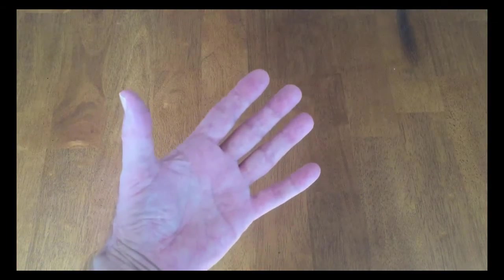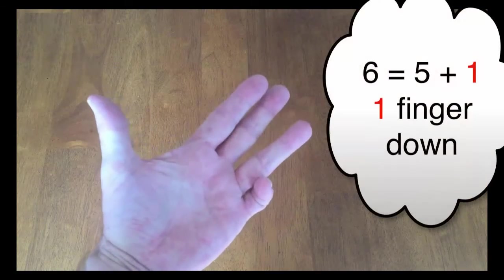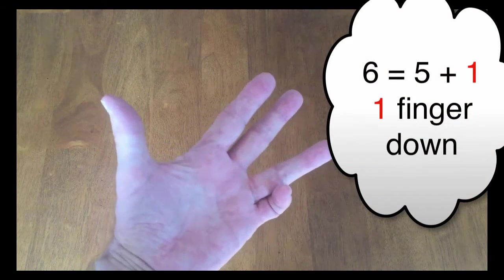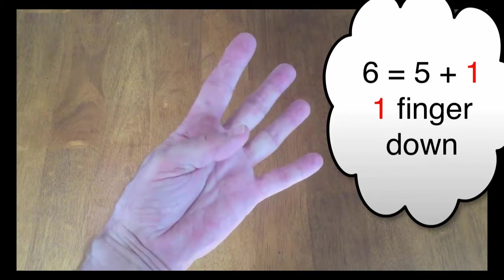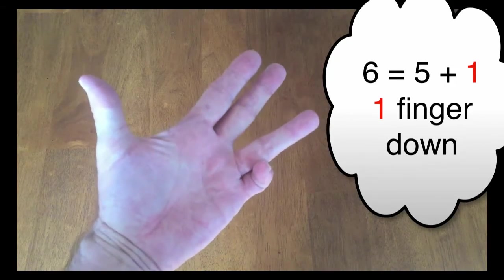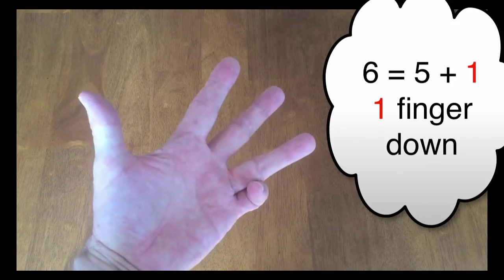Since 6 is 1 greater than 5, what you do is put down one finger. I'm choosing to put down my pinky. You could put down any finger at all. Some people like to put down their thumb. I'm choosing to put down my pinky for reasons you'll see in a little while.